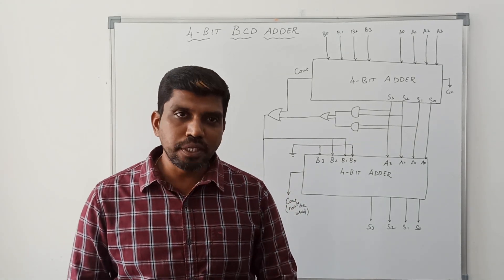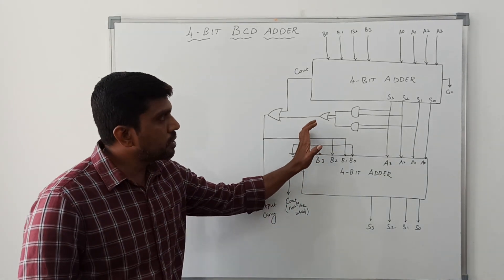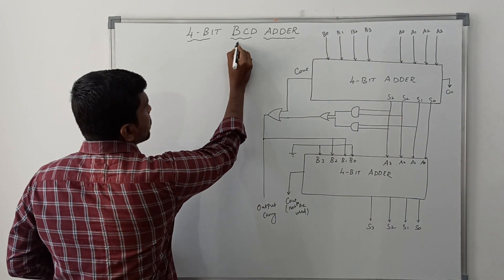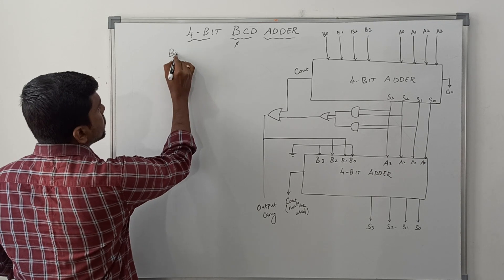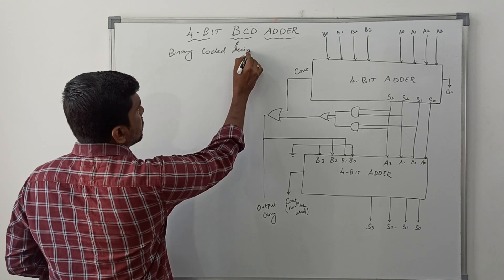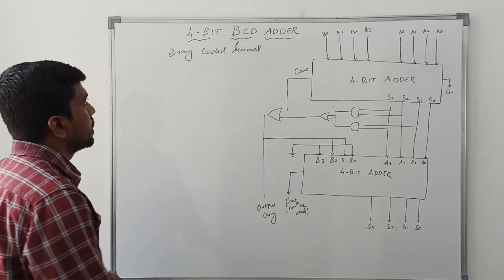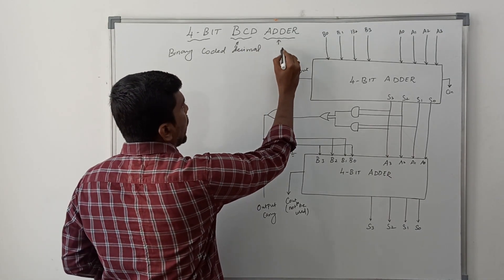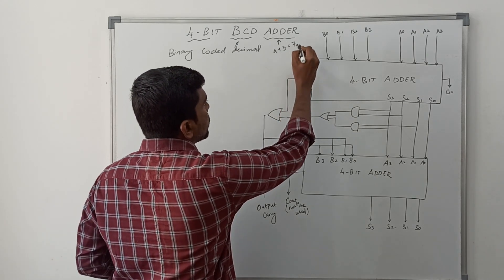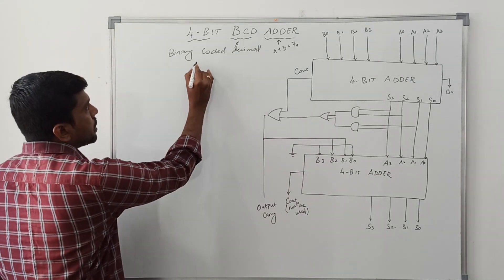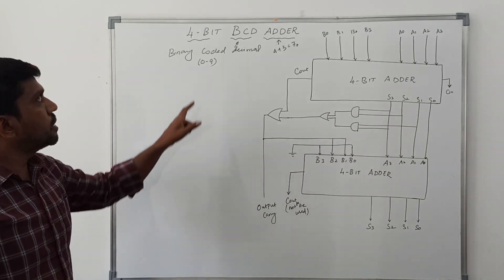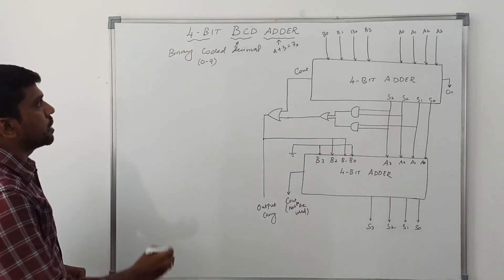Today I am going to discuss the 4-bit BCD adder. First, let me recall the term BCD — Binary Coded Decimal. An adder adds two numbers; for example, 4 plus 3 equals 7. The range of a BCD number is 0 to 9. Here I am adding two 4-bit BCD numbers.